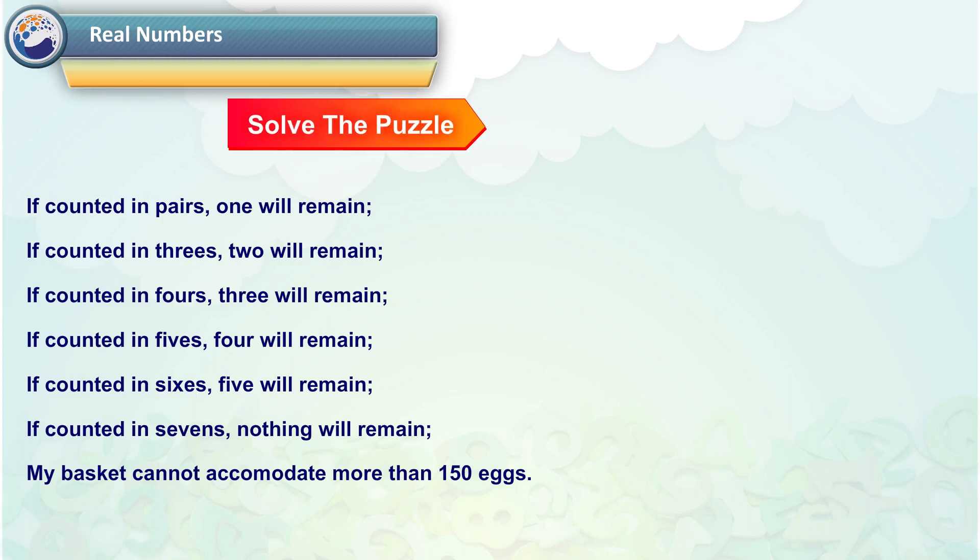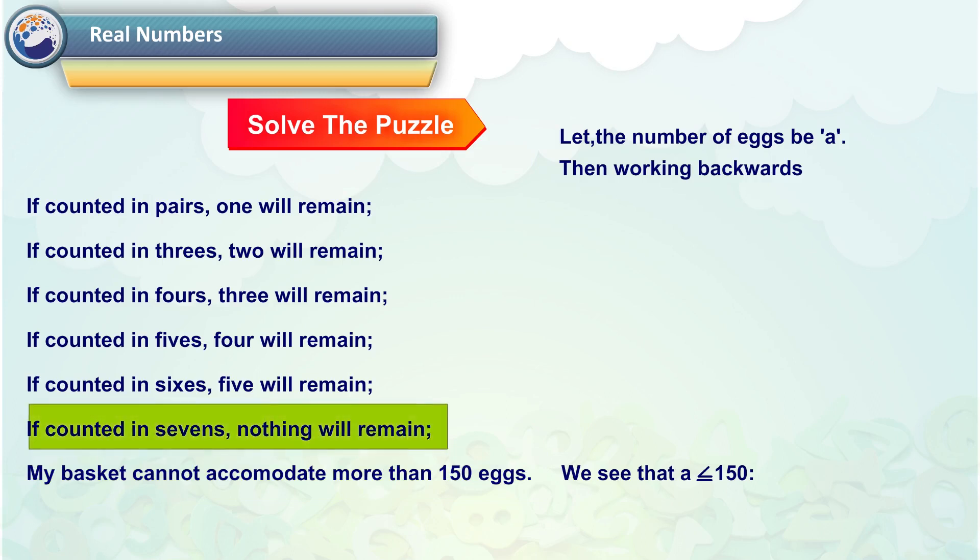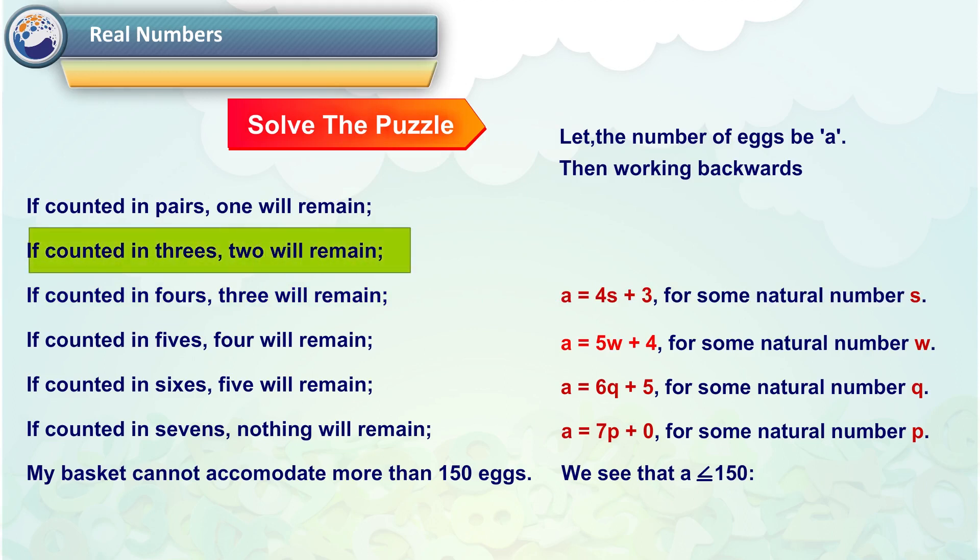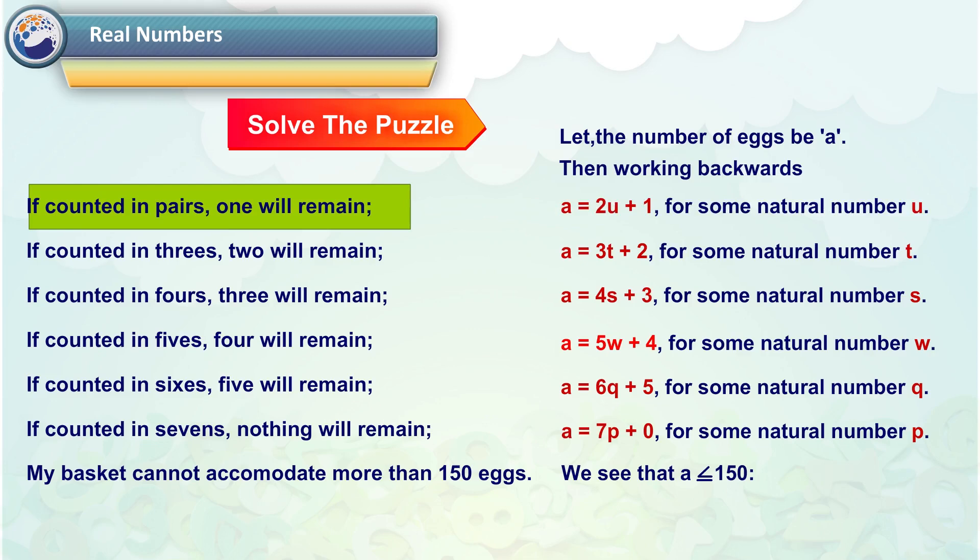Let us try and solve the puzzle. Let the number of eggs be A. Then working backwards, we see that A is less than or equal to 150. If counted in sevens, nothing will remain, which translates to A is equal to 7P plus 0 for some natural number P. If counted in sixes, five will remain. That is, A is equal to 6Q plus 5 for some natural number Q. If counted in fives, four will remain, giving A is equal to 5W plus 4 for some natural number W. If counted in fours, three will remain, that is, A is equal to 4S plus 3 for some natural number S. If counted in threes, two will remain, that is, A is equal to 3T plus 2 for some natural number T. If counted in pairs, one will remain, giving A is equal to 2U plus 1 for some natural number U.